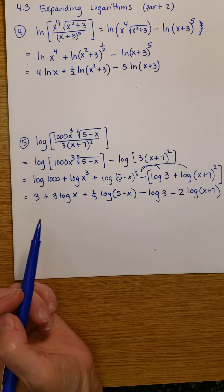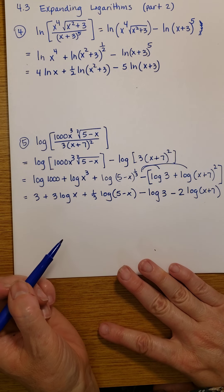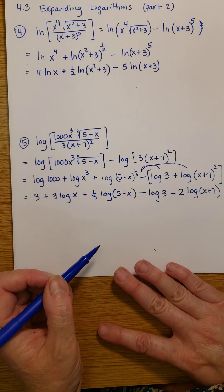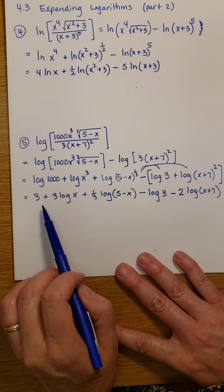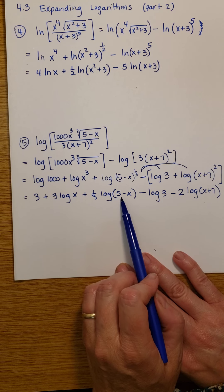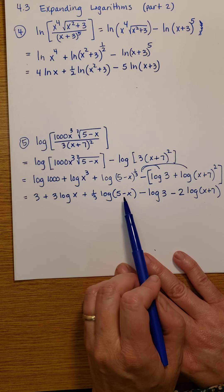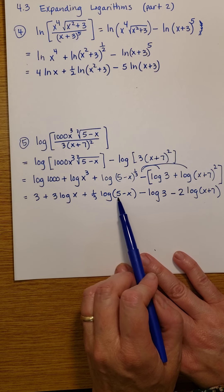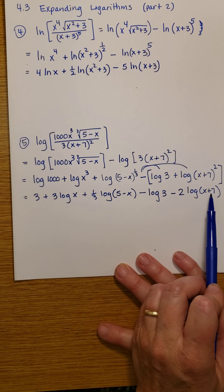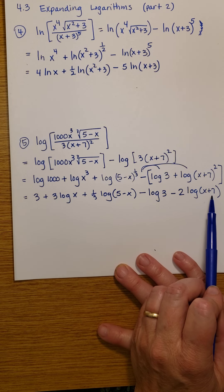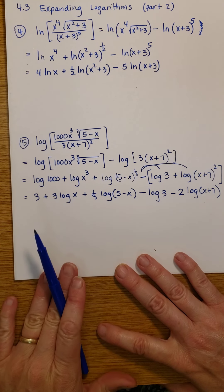Now let's see if I can simplify that any further. I think I'll just leave it there because I don't see any way to simplify it. Here we have a difference, but remember it's the log of a quotient that I can expand — I can't expand the log of a difference, I just have to leave it as a difference. And here, same thing: I have a sum inside the log, and I can only expand it if I had a product inside the log. So everything here looks good.